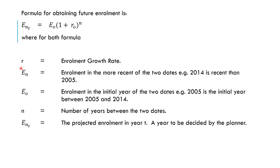What does this formula represent? The r represents enrollment growth rate. The En is the enrollment in the more recent of the two dates, e.g., if you are using 2014, this is more recent than 2005. Then E0, the initial year, in this case 2005. Then n is the number of years between the two dates.